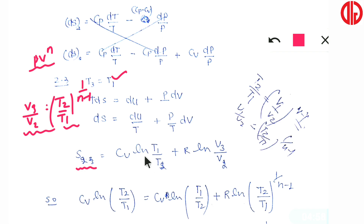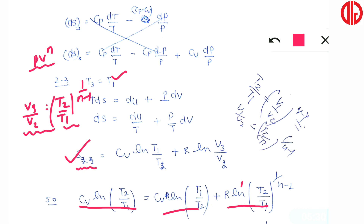Substituting, we get ΔS₂₃ = cv·ln(T1/T2) + R·ln[(T2/T1)^(1/(n−1))]. The question states the entropy change in the two processes are equal, so ΔS₁₂ = ΔS₂₃. Equating the two entropy change expressions: cv·ln(T2/T1) = cv·ln(T1/T2) + R·(1/(n−1))·ln(T2/T1). Moving cv·ln(T1/T2) to the left side gives 2·cv·ln(T2/T1) = R·(1/(n−1))·ln(T2/T1).